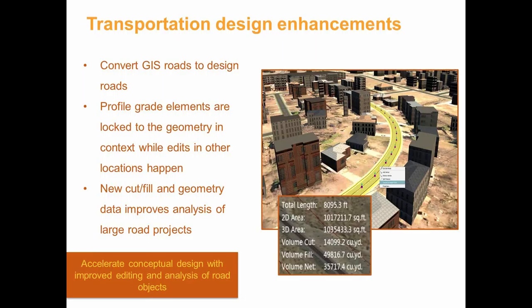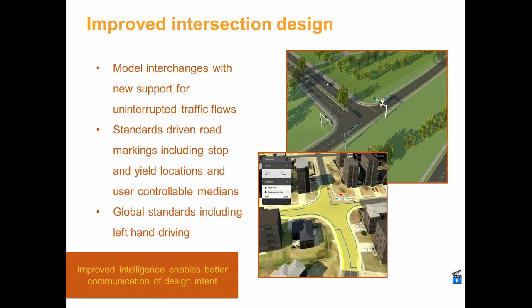Transportation design enhancements include the ability to convert GIS roads into design roads. Profile grade elements now have locking capabilities so you can hold certain points as you make changes to others. New cut/fill geometry data improves analysis of large roadways. Intersection design has improved significantly — it gives you much more control over intersections as they're created based on turning radius and vehicle types. It also controls paint striping, giving you pavement markers, more control over medians, and support for left-handed driving.